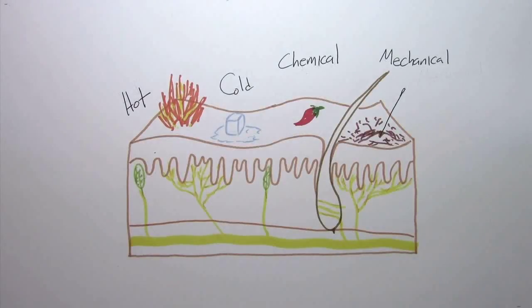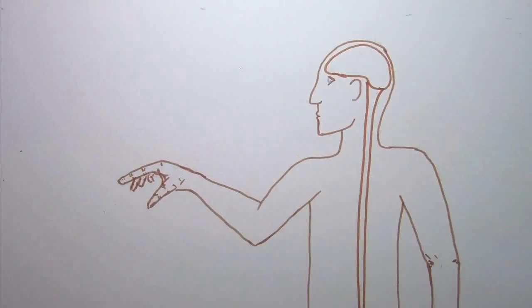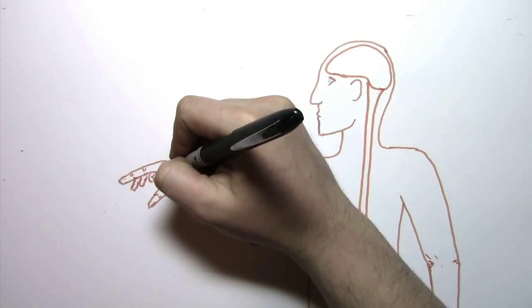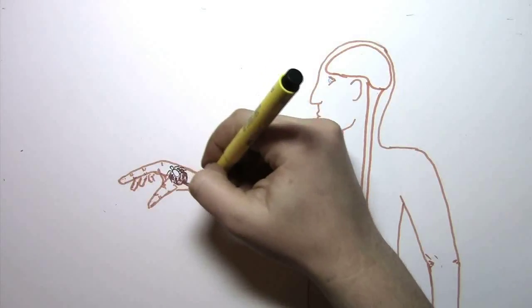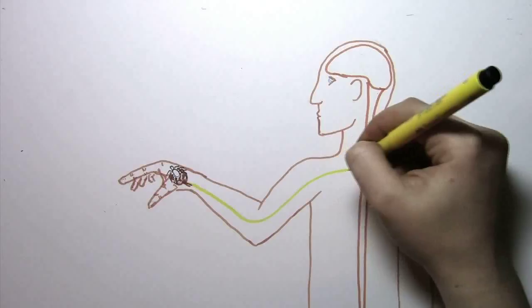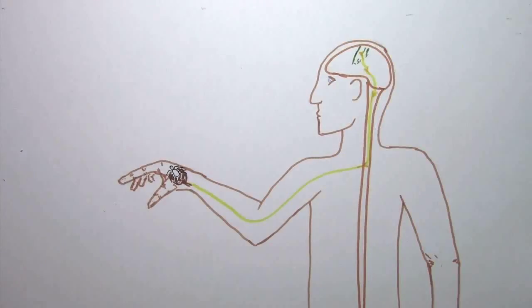Some nociceptors can be activated by all three stimulants, and some aren't activated by any at all. This entire complex structure exists so that a pressure, temperature, or chemical stimulant can trigger an action potential to be sent along nerves to reach the brain, where the information can be processed so that we can feel the world around us.